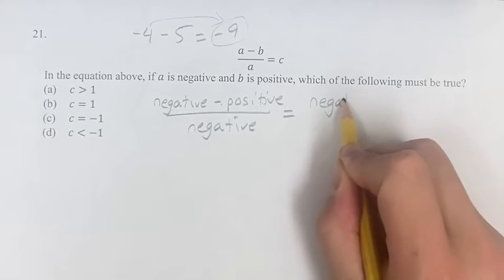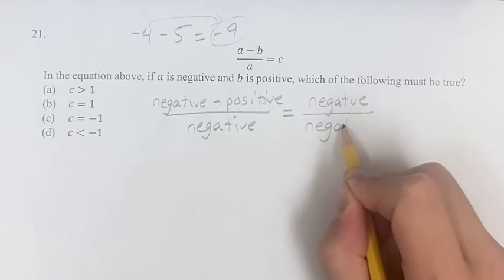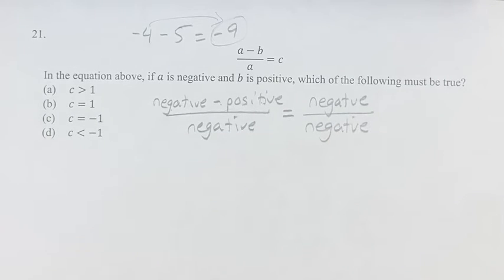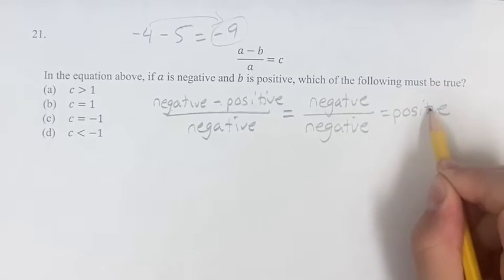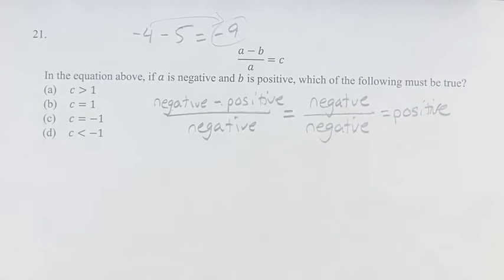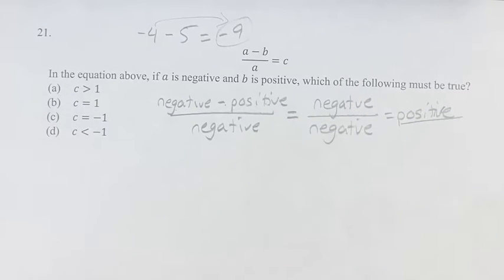So, we have a negative divided by a negative. A negative divided by a negative is a positive. And this is what we can tell from just this analysis. And so, we know c is positive.